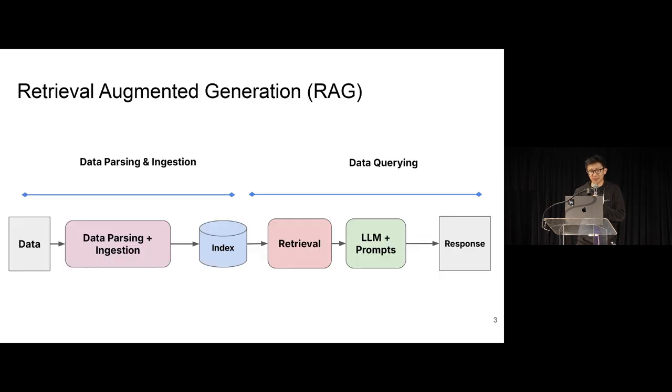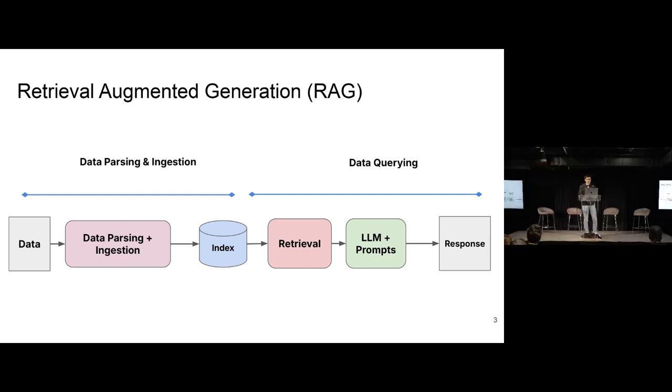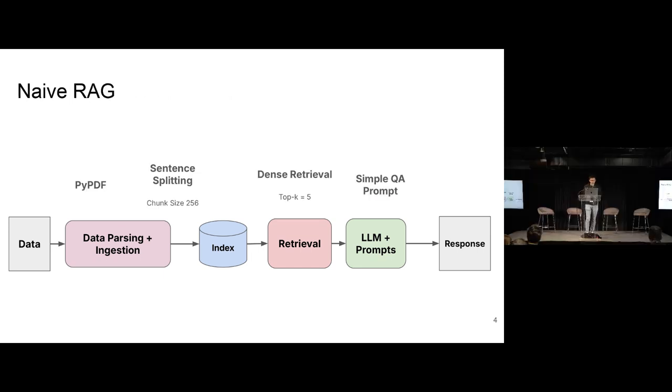So most of you probably know what RAG is. That's probably why you're here. There's two main components to RAG. There's data parsing and ingestion, as well as data querying, like the retrieval LLM prompting piece. And many of you, if you're just starting off building RAG, probably have built something of the following form.